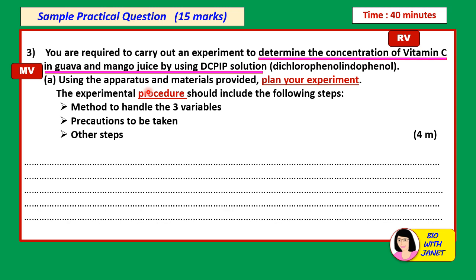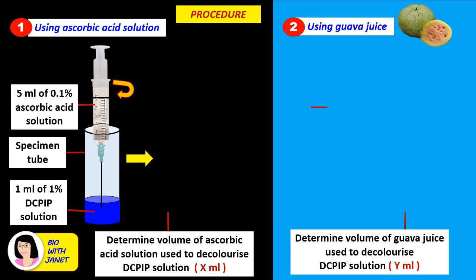Now that you've determined your MV and RV, you can start planning the procedure based on the apparatus and materials given. In this procedure, you must mention how you handle the MV (manipulated variable), the RV (responding variable), and the CV or fixed variable. Then think about the precautions to be taken and other steps. Pause the video and try to write out your experiment procedure in the blank spaces, then we'll look at the answer.